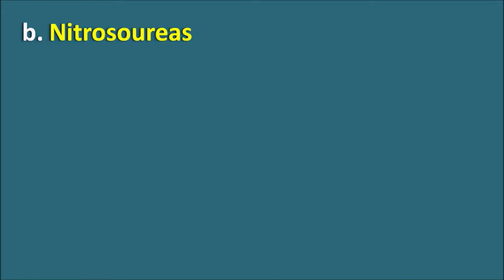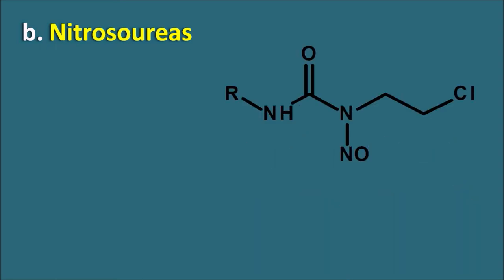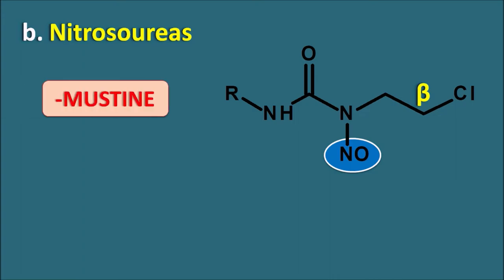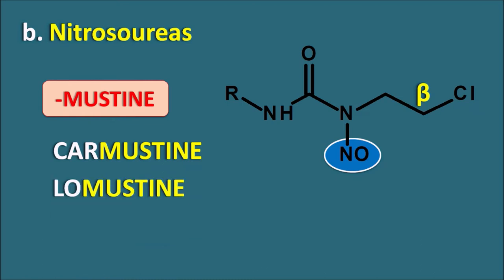The second subgroup within alkylating agents is the nitrosoureas. These share a similar structure with a beta-chloroethyl side chain on a urea nitrogen, plus one nitrogen bearing a nitroso (-NO) group. They are also indicated by the suffix '-mustine', so carmustine and lomustine are both nitrosoureas. The '-mustine' suffix can thus indicate either nitrogen mustards or nitrosoureas, both acting as alkylating agents.